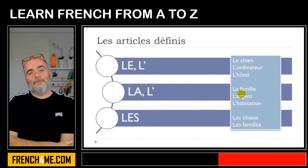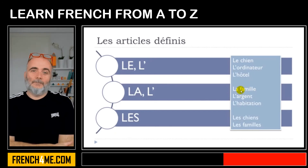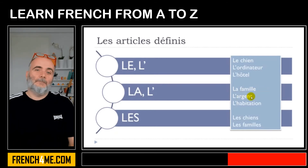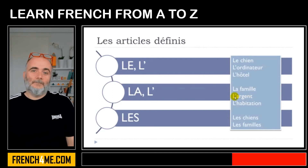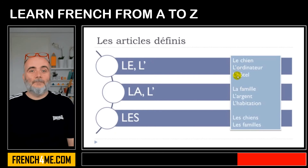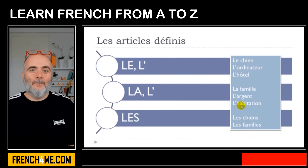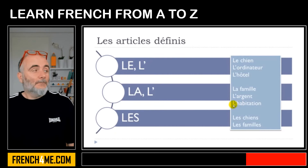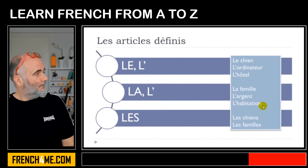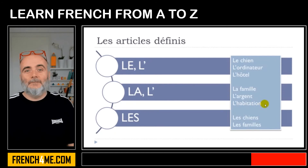Feminine form: 'la famille' — family — no problem, 'la famille'. Then we've got 'argent', money. Same reason: A and A don't work together, so 'l'argent'. And the same thing as previously — even if you've got this H, the first sound you hear is A, so you take this A away and get 'l'habitation'.